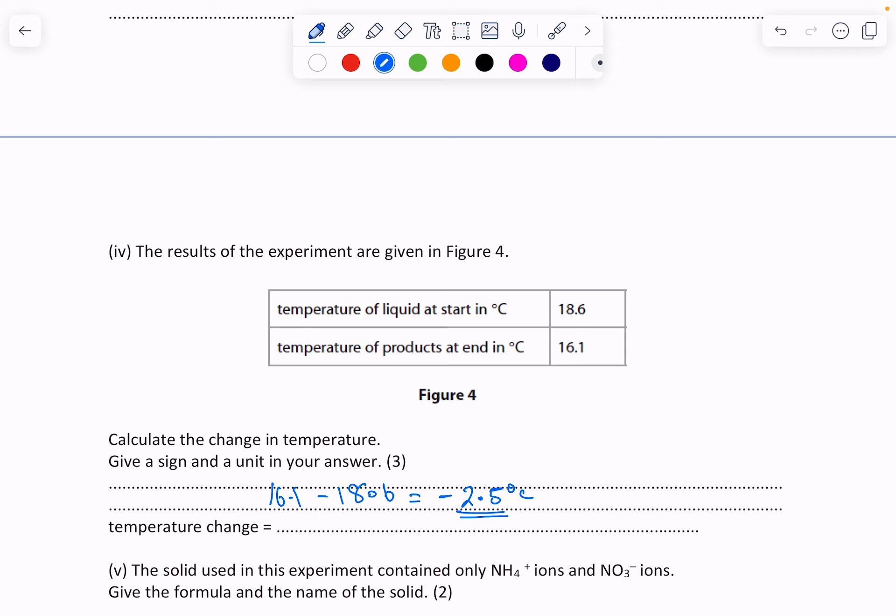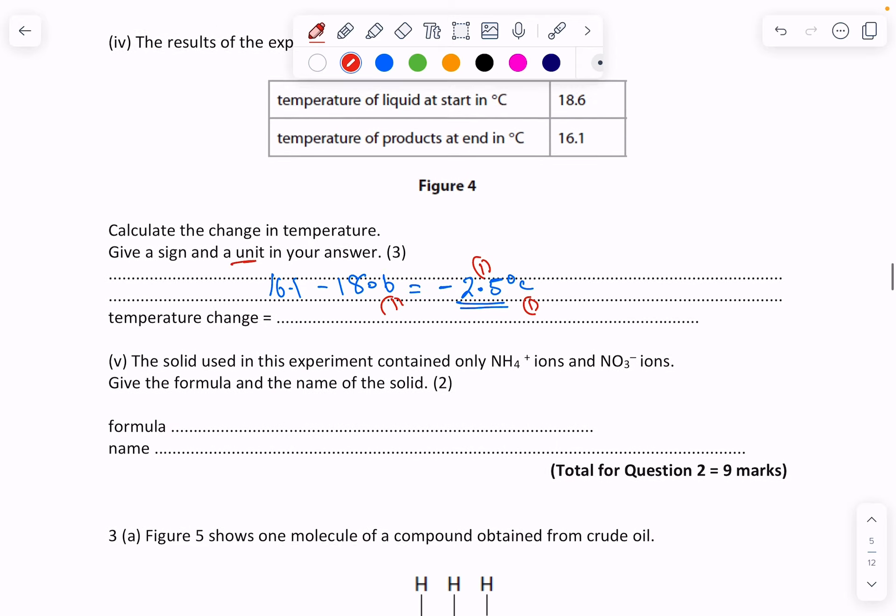Marks-wise, it wants the units as well. You get one mark for showing the working out, one mark for the minus 2.5, and one mark for the units of degrees C.